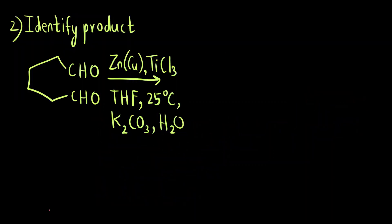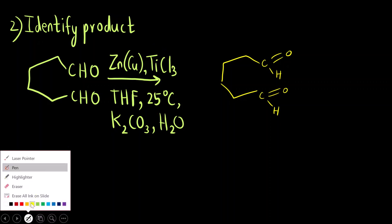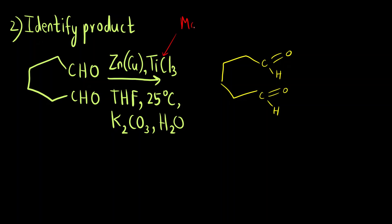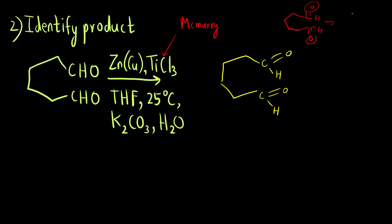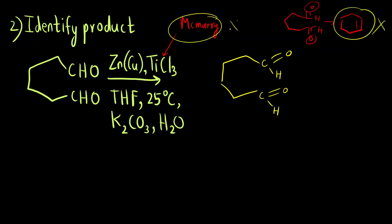Let us see how this reaction takes place. The reactant has C=O and C=O. Titanium chloride is used, so you might get confused between McMurry and this reaction. In McMurry reaction an alkene is formed — intramolecularly the two carbonyls combine to give an alkene. But checking the options, no such product was present, so McMurry coupling will not take place here; we also use a titanium salt in both.